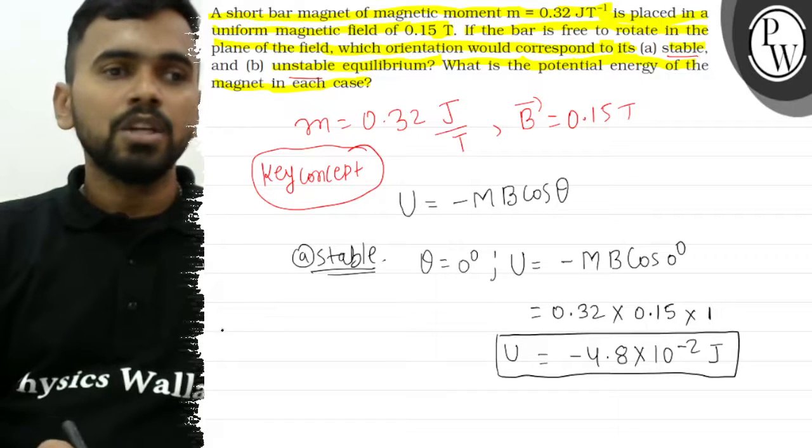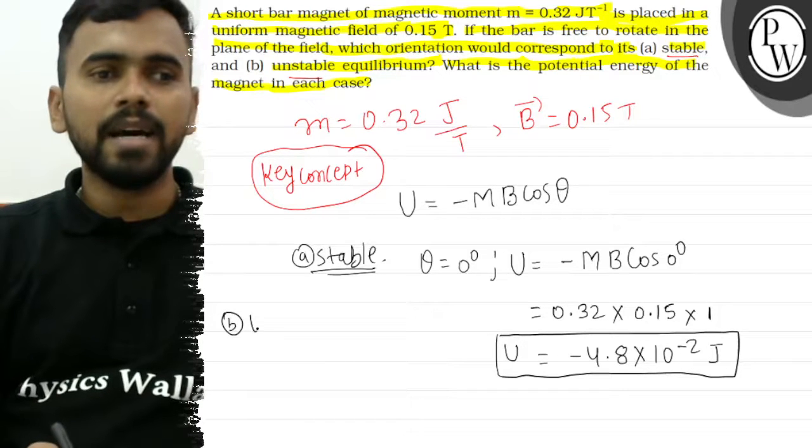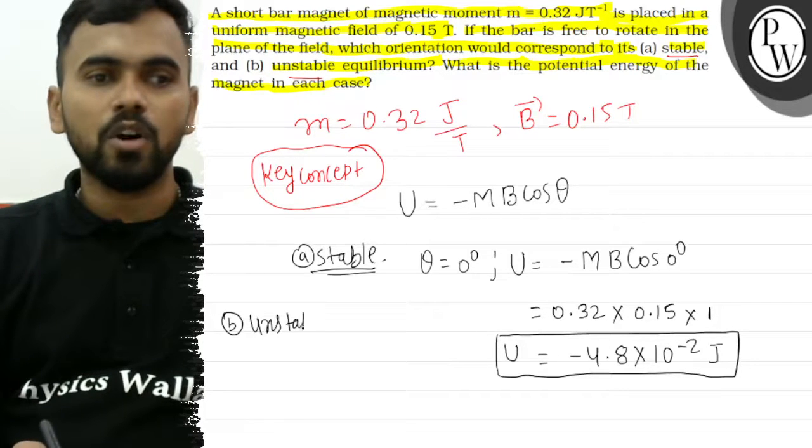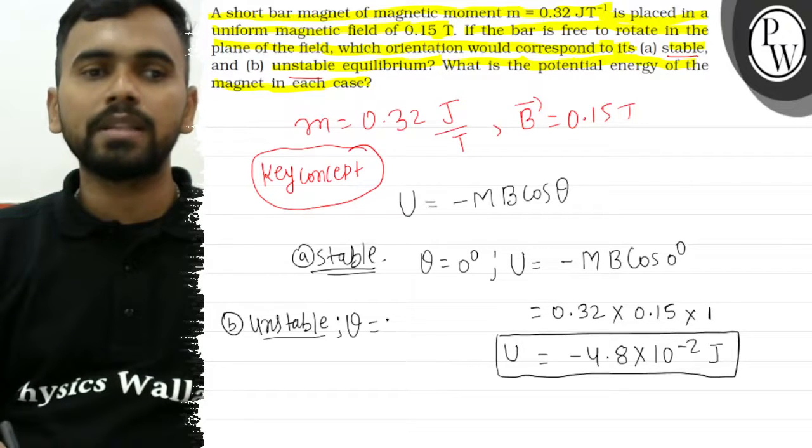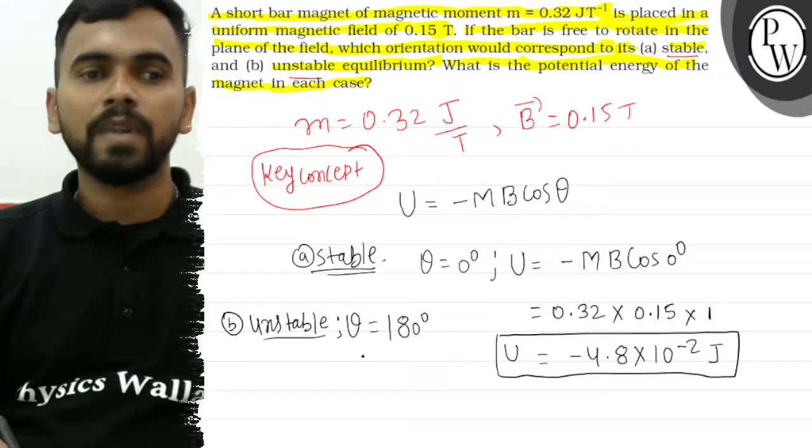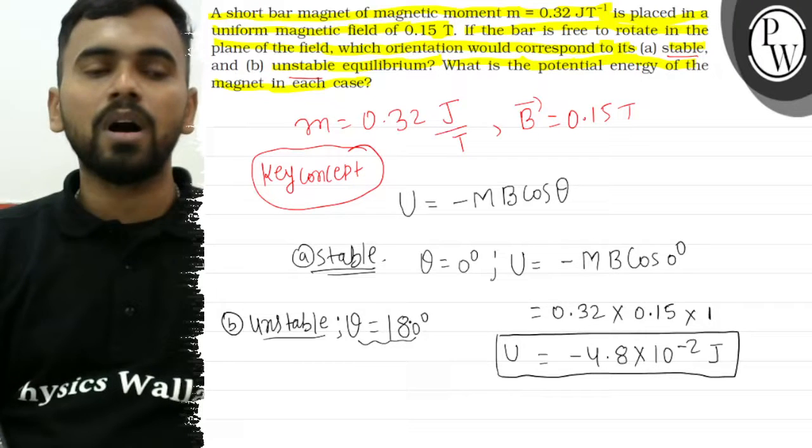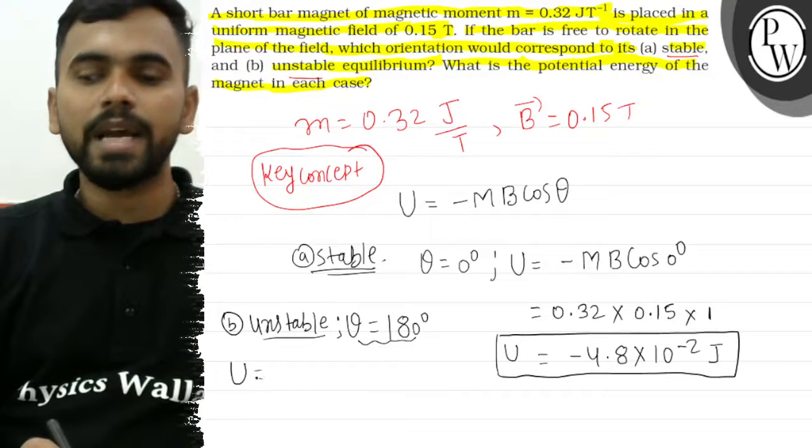For unstable equilibrium, this occurs when theta is 180 degrees. So U equals minus mB cos 180 degrees.